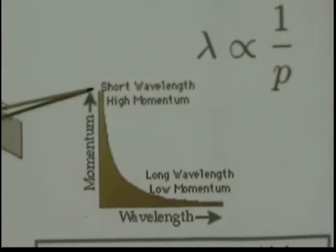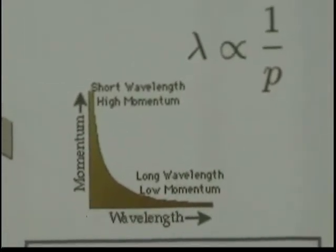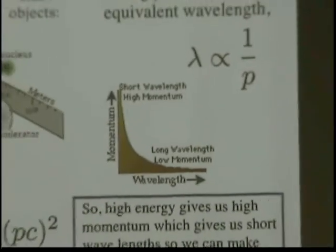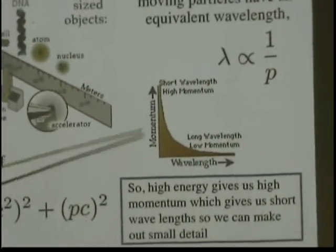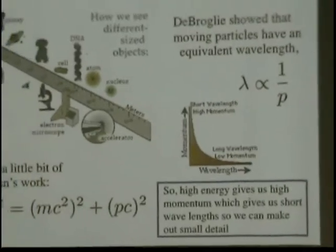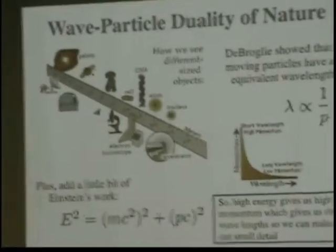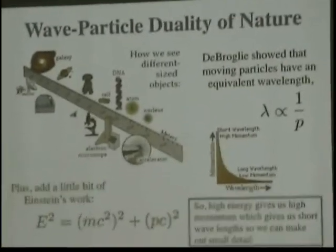So, short wavelength, high momentum, long wavelength, low momentum. Particle accelerators operate here. High momentum, short wavelength. Allows us to have finer resolution, see things on a much smaller scale.